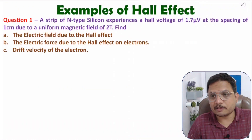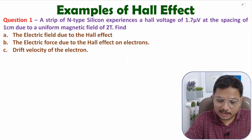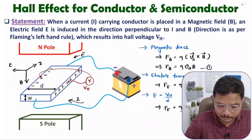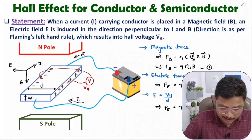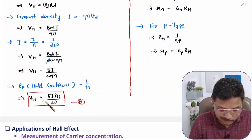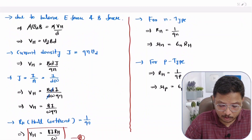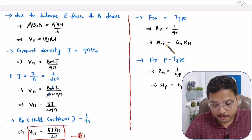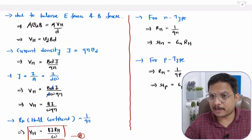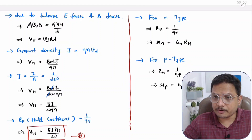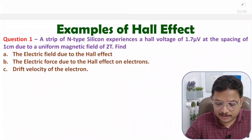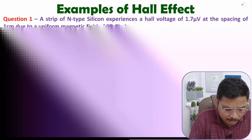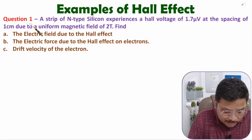Before we start with the solution of all these examples, I want you to go through my last video based on the Hall effect. In that video I have explained all the basics related to Hall effect, as well as derived all the parameters — like Hall voltage, and what will happen with N-type and P-type material in terms of Hall coefficient and mobility.